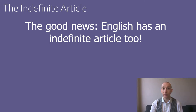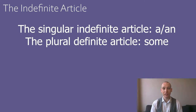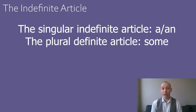There is some good news about the indefinite article for English speakers, and that is we have an indefinite article in English as well. For singular items, the indefinite article is 'a' or 'an'. I'd like to point out that 'a' or 'an' is really just a quick way of saying the word 'one'.